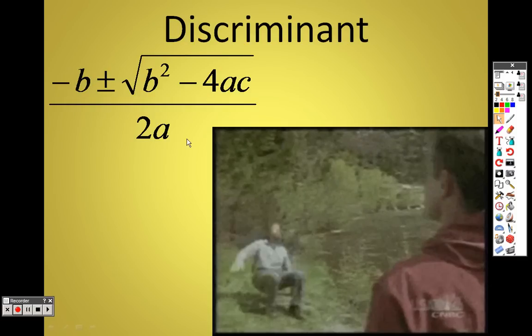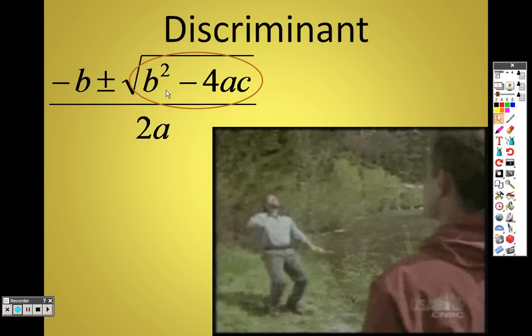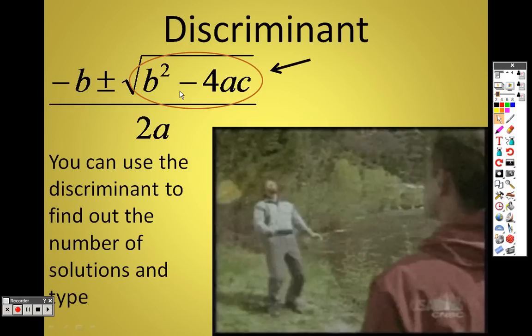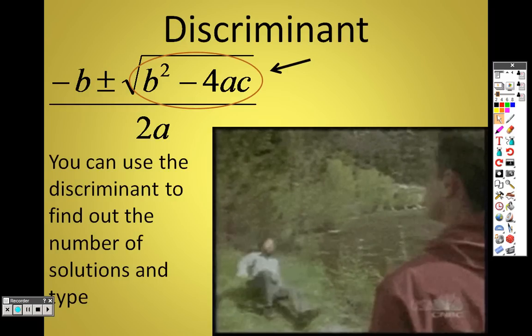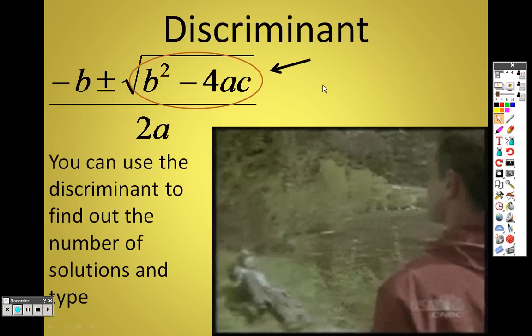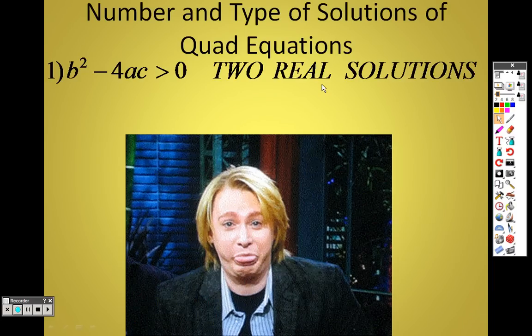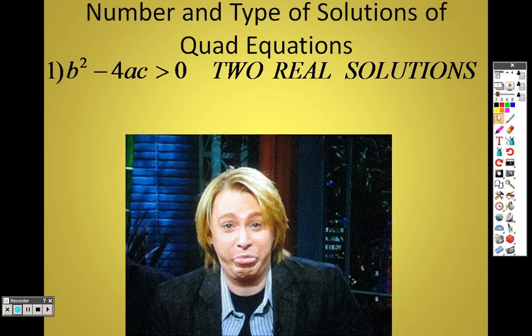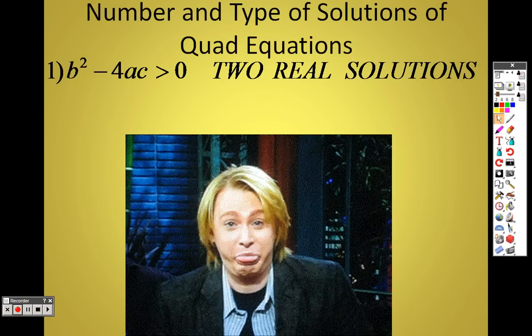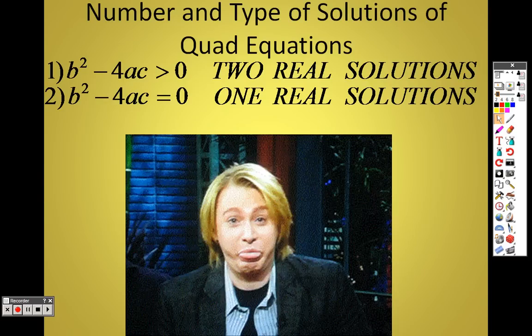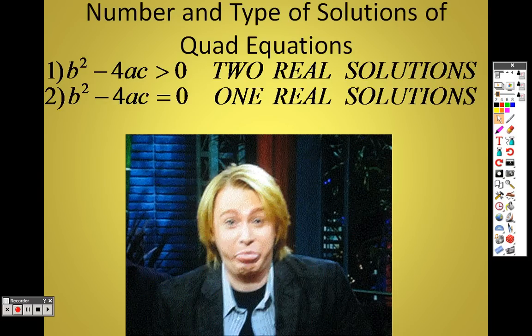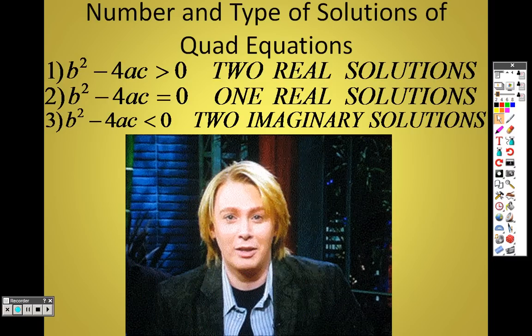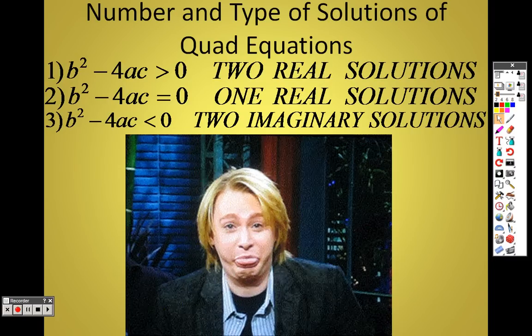This whole thing is the quadratic equation. A discriminant is this item here, what's underneath the root sign. That is a discriminant. You can use a discriminant to find out the number of solutions. How many solutions are there in your quadratic? When the b squared minus 4ac is greater than 0, you have two real solutions. If b squared minus 4ac equals 0, then you only have one solution. And if b squared minus 4ac is less than 0, you have two imaginary solutions, which means two solutions that aren't real.